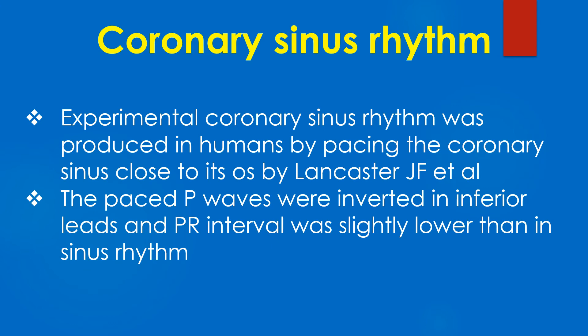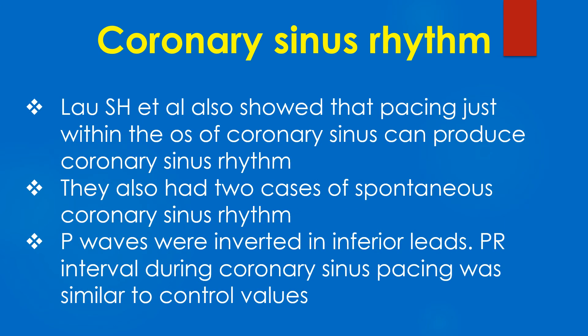Experimental coronary sinus rhythm was produced in humans by pacing the coronary sinus close to its OS by Lancaster and associates. The paced P waves were inverted in inferior leads and the PR interval was slightly lower than in sinus rhythm. Lau and colleagues also showed that pacing just within the OS of the coronary sinus can produce coronary sinus rhythm. They also had two cases of spontaneous coronary sinus rhythm, with P waves inverted in inferior leads and PR interval during coronary sinus pacing similar to control values.